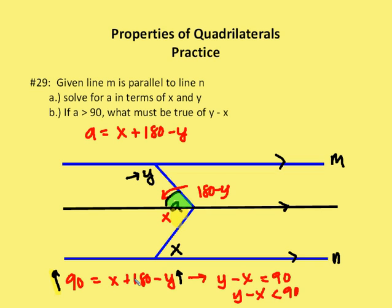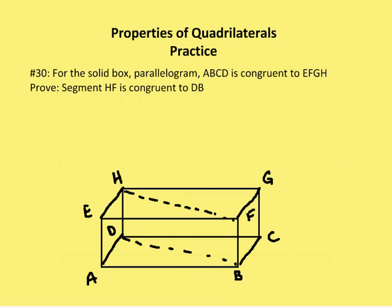In this case, I've rearranged the equation. I have 90 is equal to X plus 180 minus Y. I add Y to both sides. I subtract X from both sides. I say that Y minus X is equal to 90. But we see that as the value of A gets larger and larger, the value of Y minus X gets smaller. So as A gets bigger than 90, Y minus X will be less than 90.